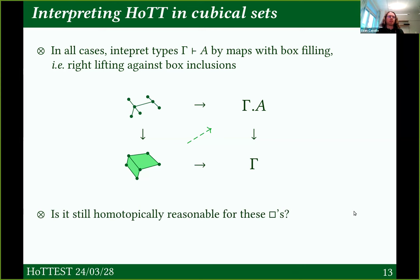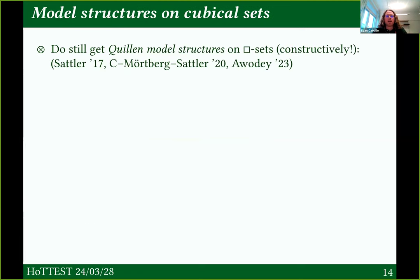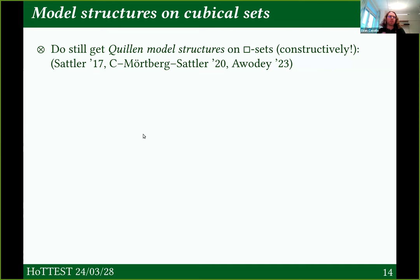We've essentially imported this box filling with a few adjustments from Kan's work. Another question is: is this still homotopically reasonable for these extended cube categories? Is this still a reasonable notion of what makes a cubical set a space when we change what our cubical sets are? What's perhaps remarkable is that we do still get Quillen model structures on these forms of cubical set, which correspond to the homotopic models. A Quillen model structure is some kind of presentation of a higher category — it describes some kind of homotopical world.